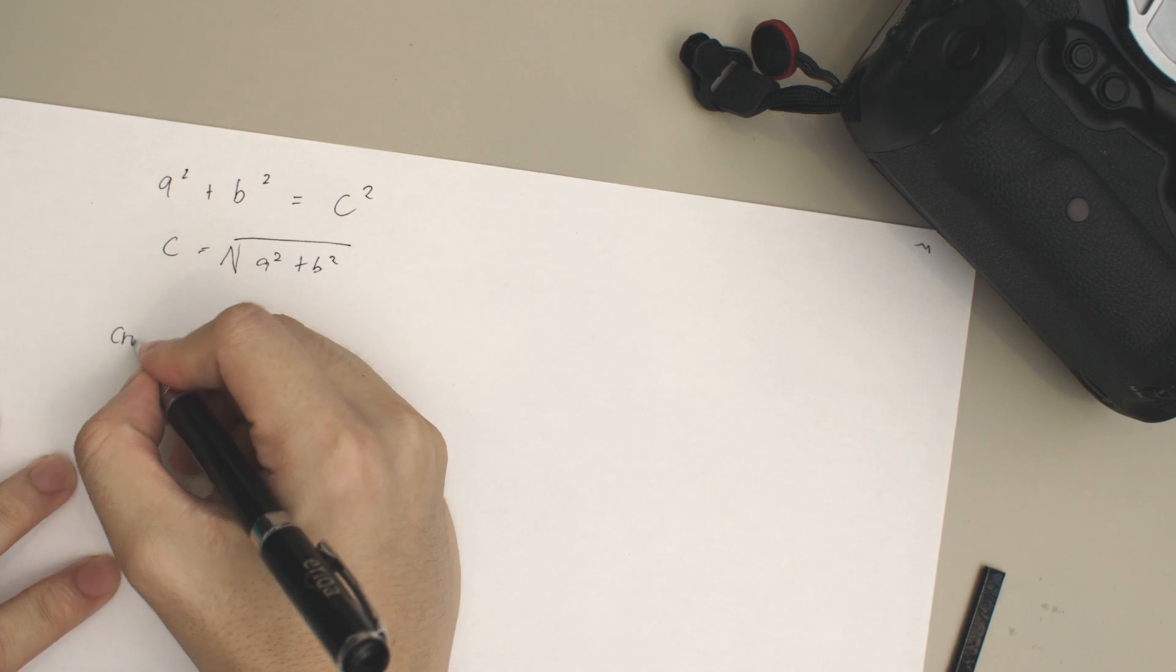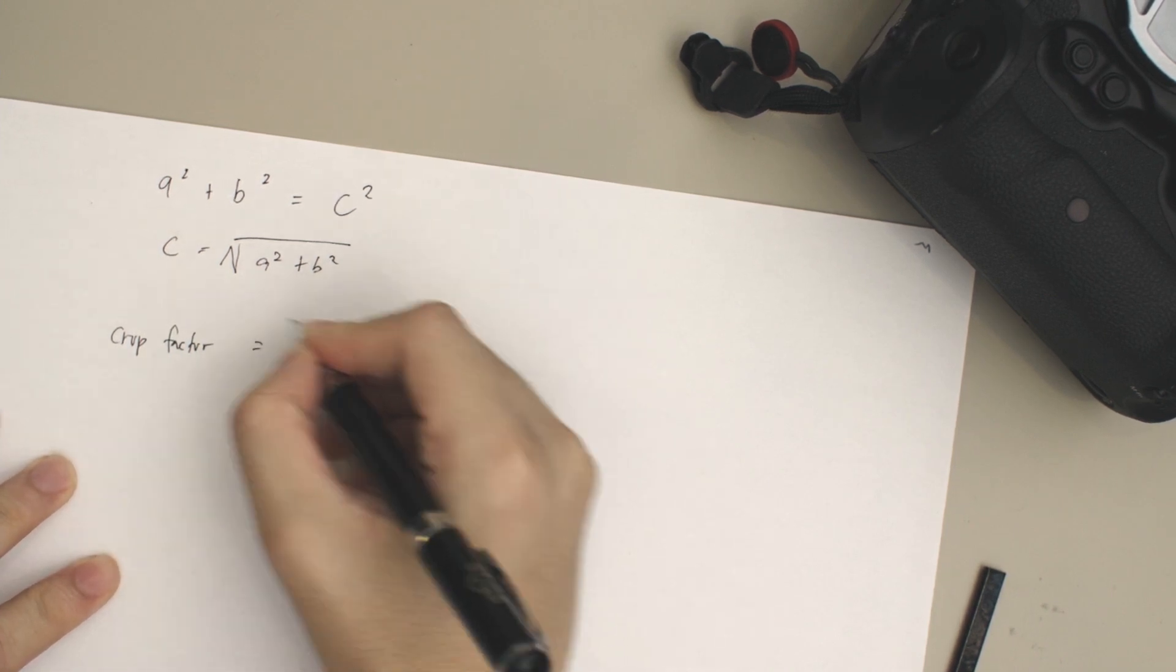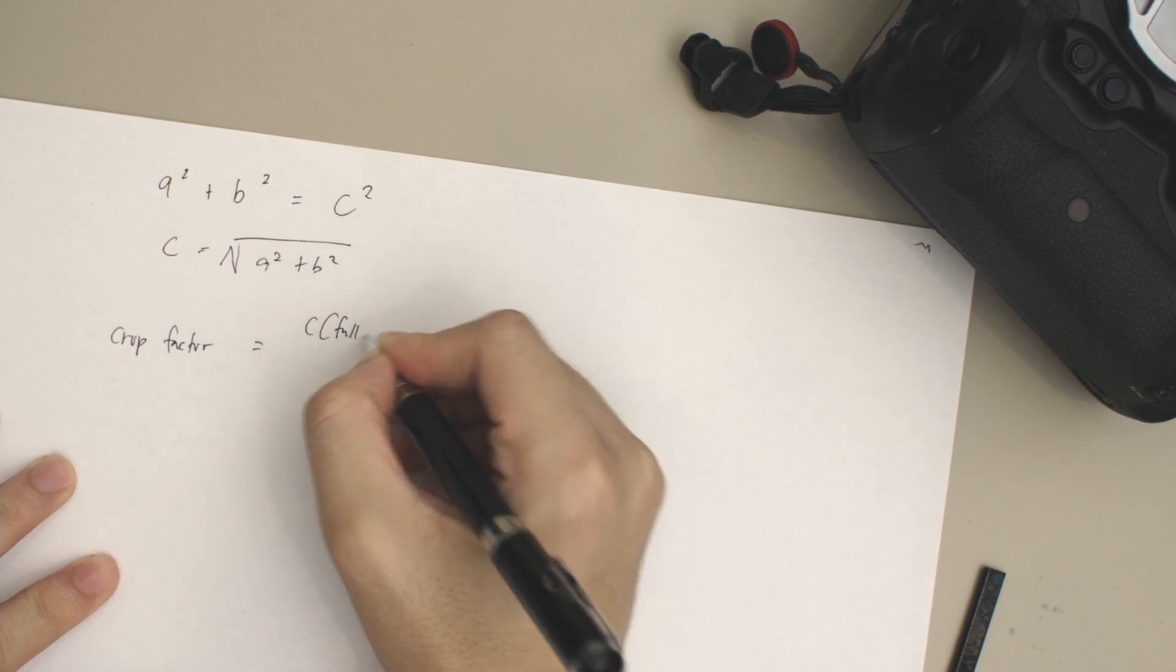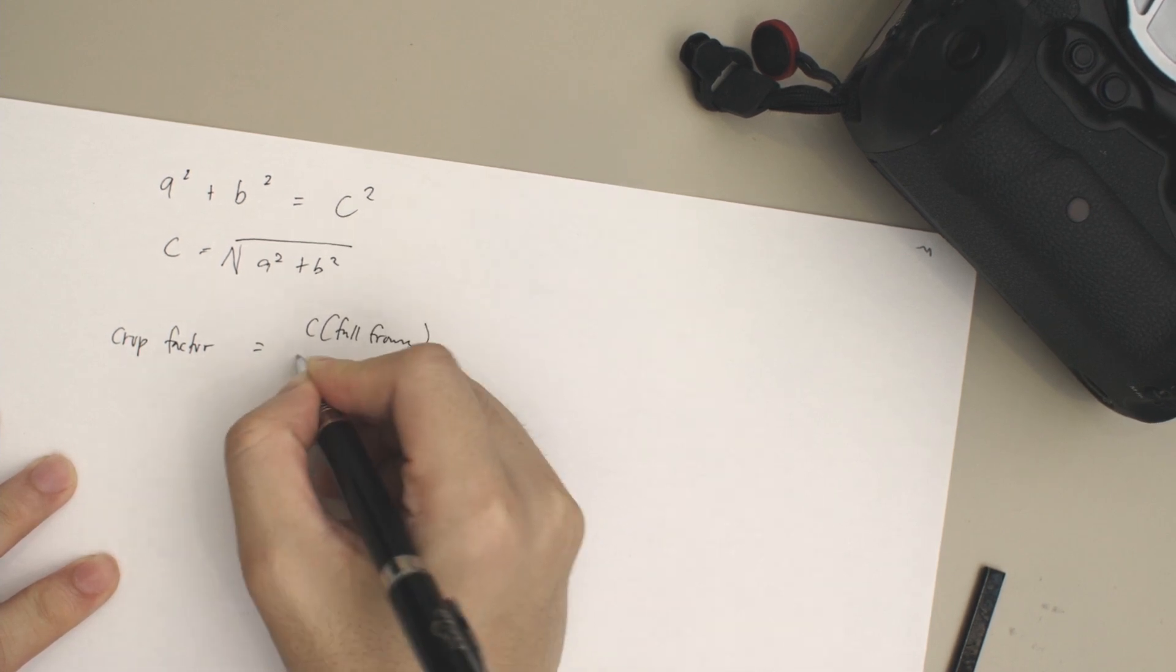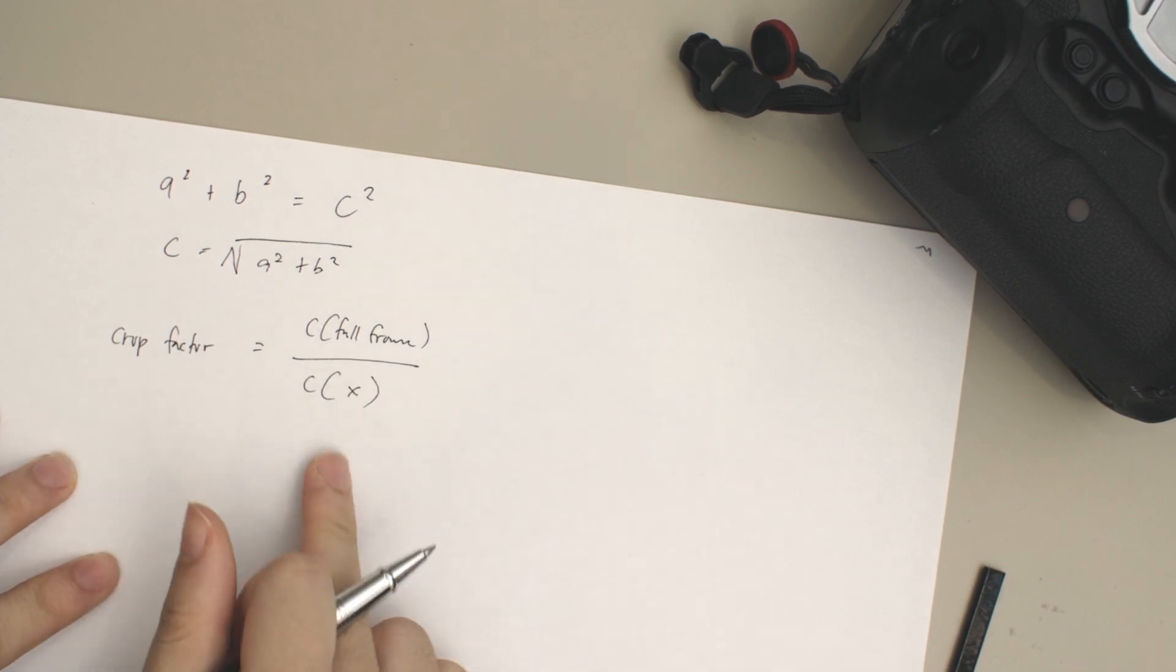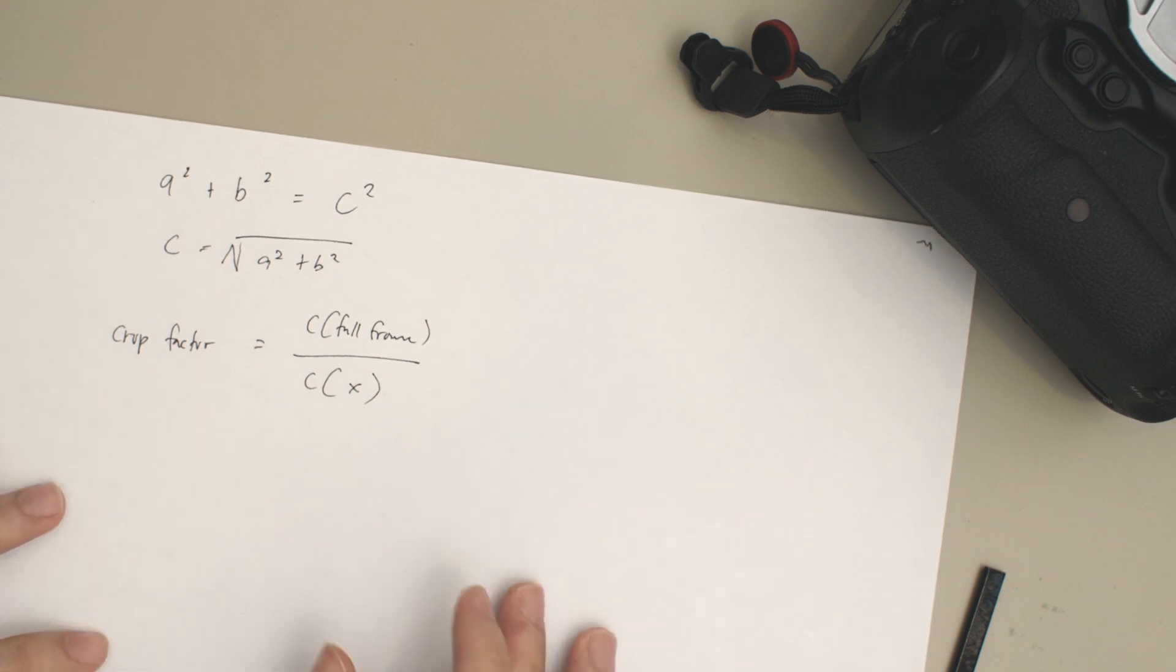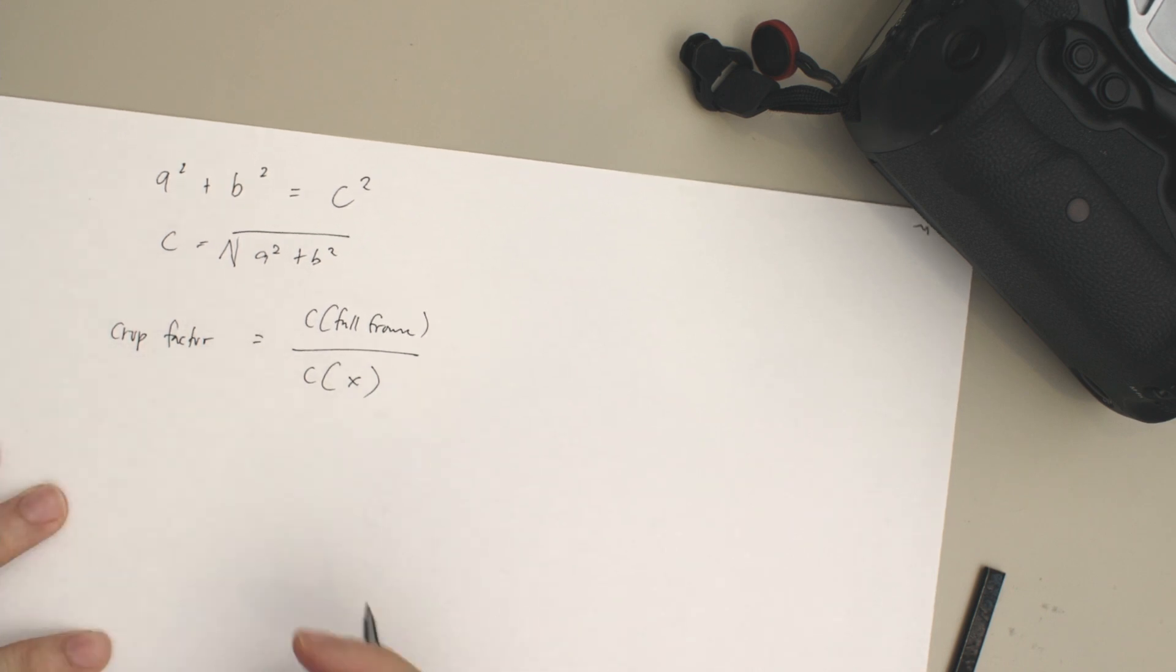How we find crop factor is we're actually going to be using c of full frame divided by c of whatever camera that you're looking for—could be Fuji, Canon, Panasonic, it doesn't matter. This is how we're going to find the value of the crop factor.